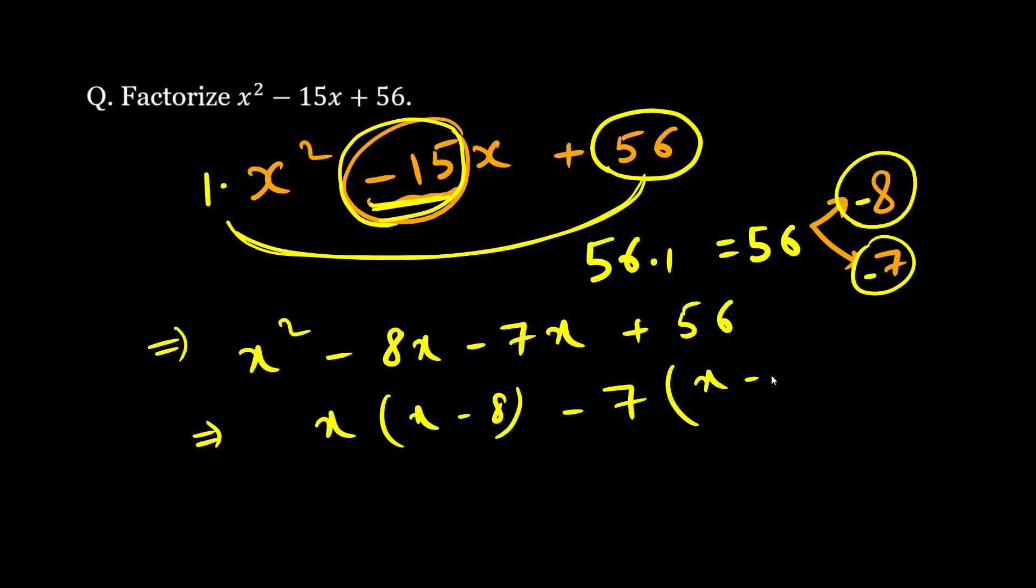So from here I get (x - 7)(x - 8). So finally this is our answer: (x - 7)(x - 8).